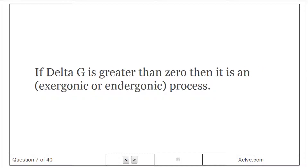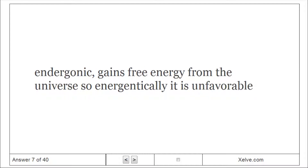If delta G is greater than zero, then it is an endergonic process. It gains free energy from the universe, so energetically it is unfavorable.